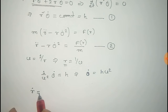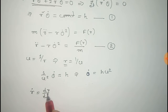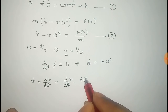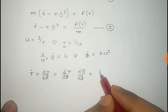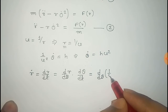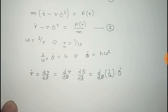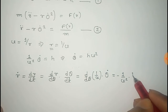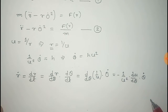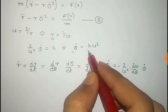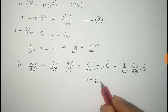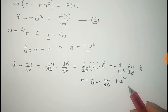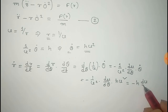To find R double dot for use in equation two, we first find R dot equals dR/dt. We can write dR/dt as (dR/dTheta) times (dTheta/dt). Differentiating 1/U with respect to Theta gives minus (1/U squared) times dU/dTheta, multiplied by Theta dot. Substituting Theta dot equals H U squared, this becomes minus (1/U squared) times dU/dTheta times H U squared, which simplifies to minus H times dU/dTheta.